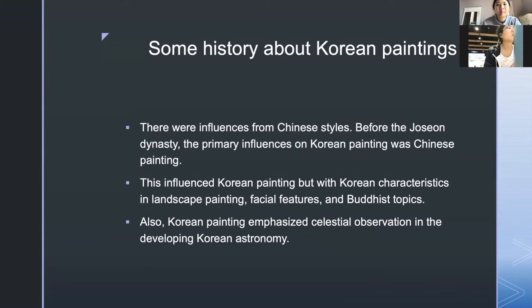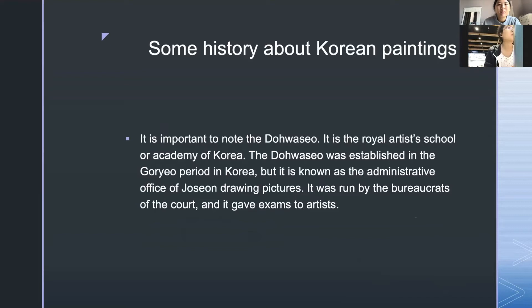It is important to note the Dohua-seo, which is the Royal Artist School or Academy of Korea. The Dohua-seo was established in the Goryeo period, but it is known as the Administrative Office of Joseon Drawing Pictures. It was run by bureaucrats of the court, and it gave exams to artists.